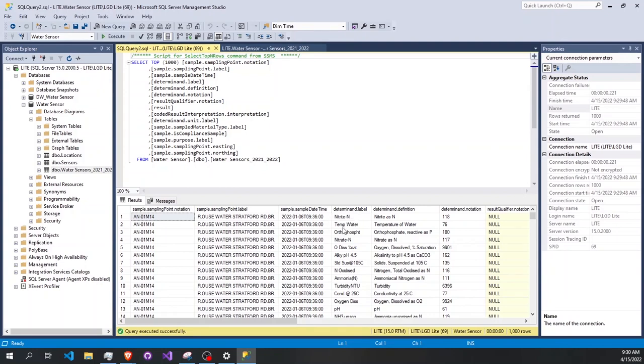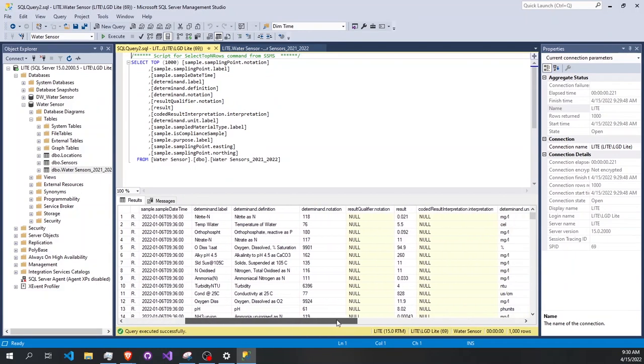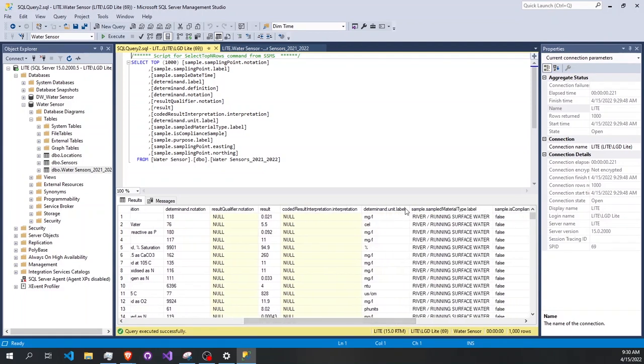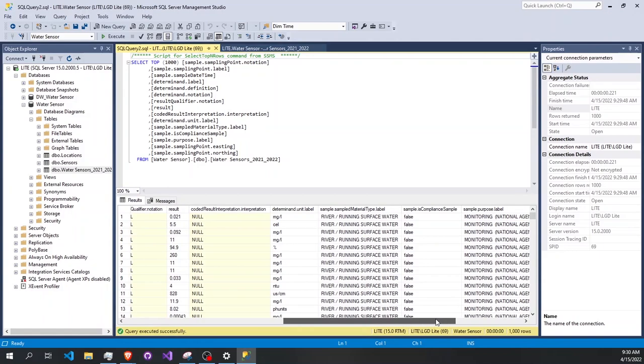Like here there is temperature water, and here we have the results and other columns like the unit of the label and other data, like for example whether it's a river or just a simple surface of the water.